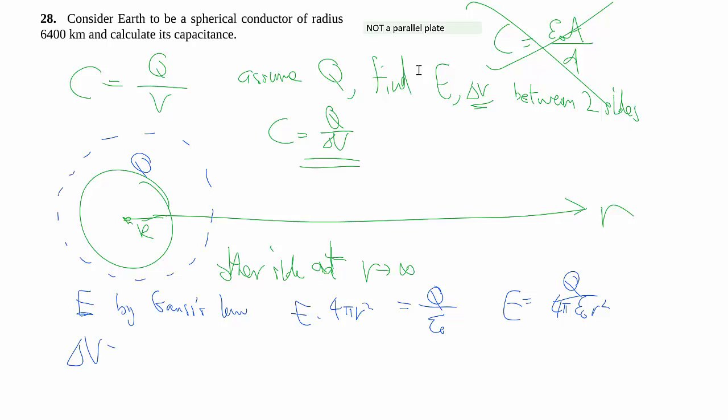Then we find delta V by taking the integral from infinity to R. And this also we've done before, so sparing you the details, giving us 4 pi epsilon naught times R of the radius of the earth.